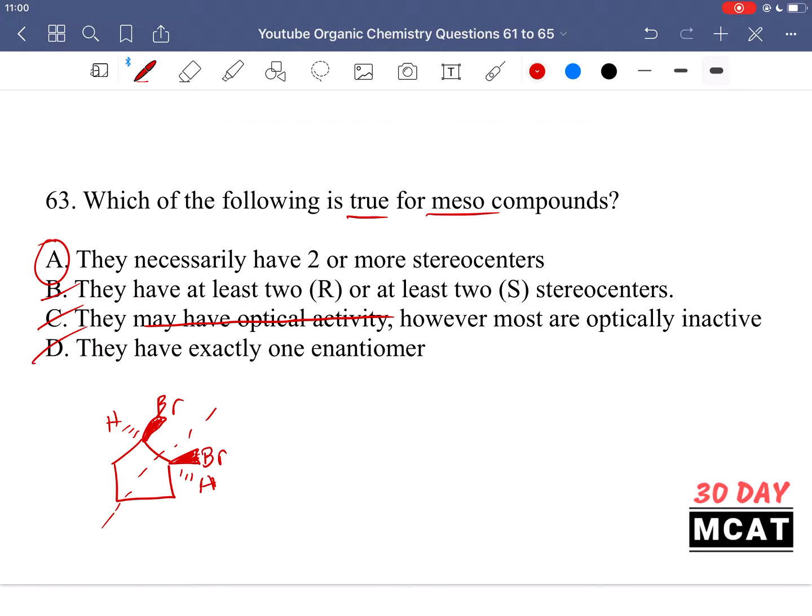Option D says they have exactly one enantiomer. No, they are a compound which is overall achiral, meaning they have no enantiomers. So this would be incorrect.